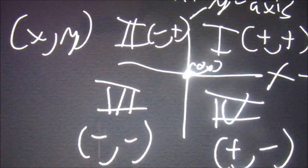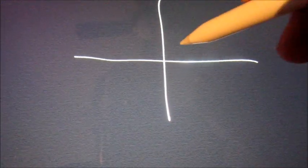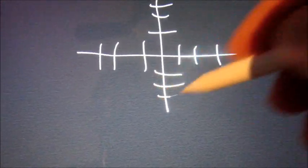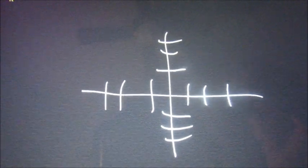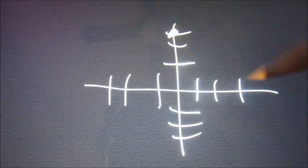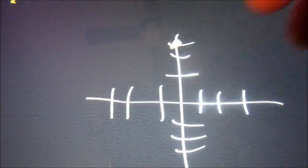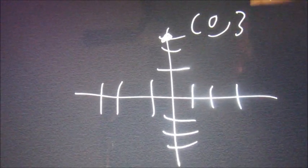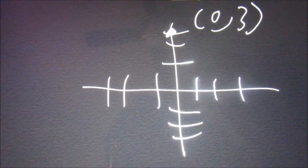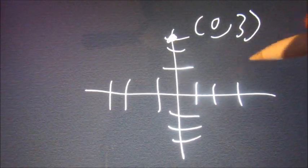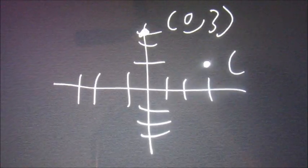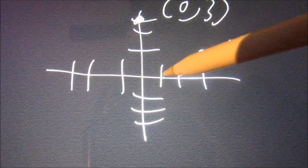So if we have any point, let's say we have our graph. If we say that we have a point right here, we've gone 0 along the x-axis — so that has to go first — and we've gone up, which is positive, for 3. This point is on the y-axis.